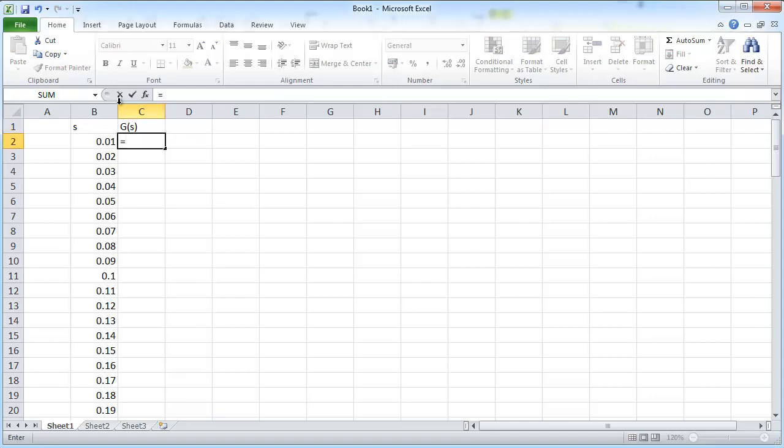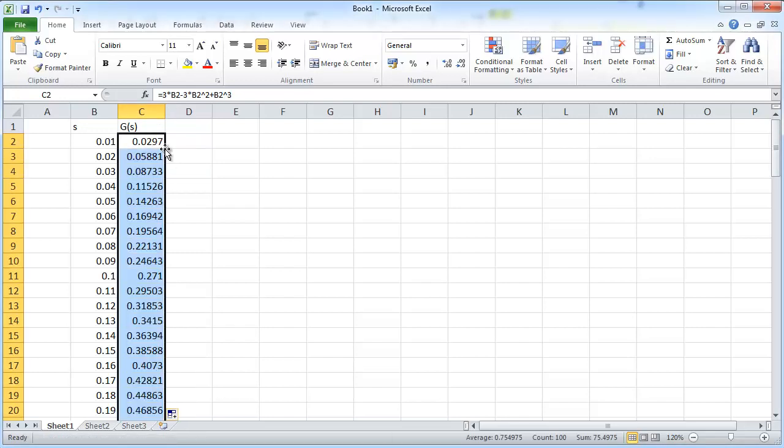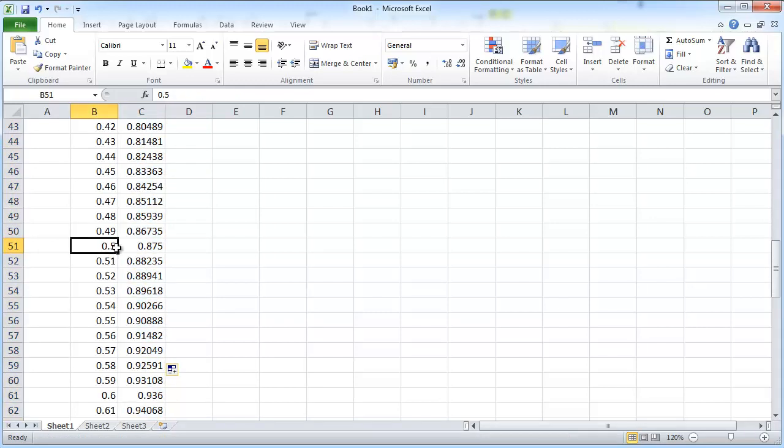And in here, I'll just type in the formula for the CDF. That was 3 times the value of s minus 3 times s squared plus s cubed. Now we can just copy that across. I'll just double-click the little square box, and it will automatically copy the formula down.